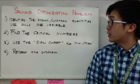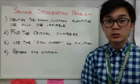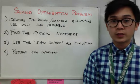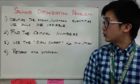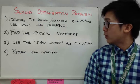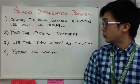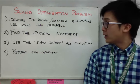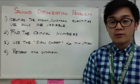First, we need to identify the known and the unknown quantities, and we should only use one variable when solving optimization problems. We need to know how to find the critical numbers, and also we need to know how to use the sign chart in finding the minimum and the maximum of our function.